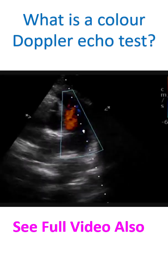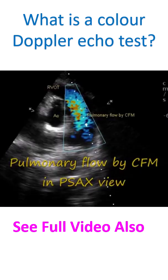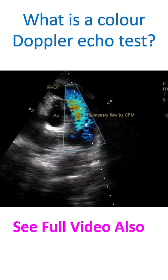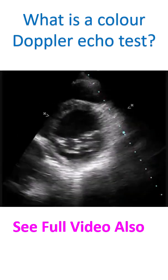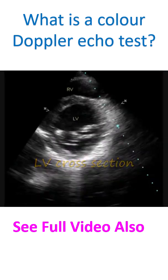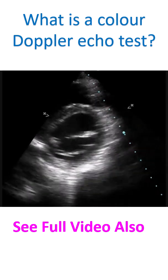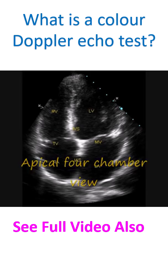The principle of Doppler is that the frequency of sound wave coming from an object which is moving towards the ultrasound probe increases, while that from an object moving away from the probe decreases. It is similar to the difference in the sound of a train whistle, which is different when the train is moving towards you than when it is moving away from you.